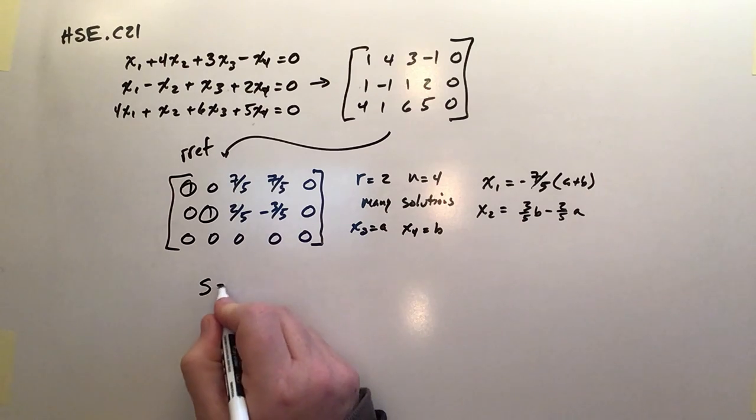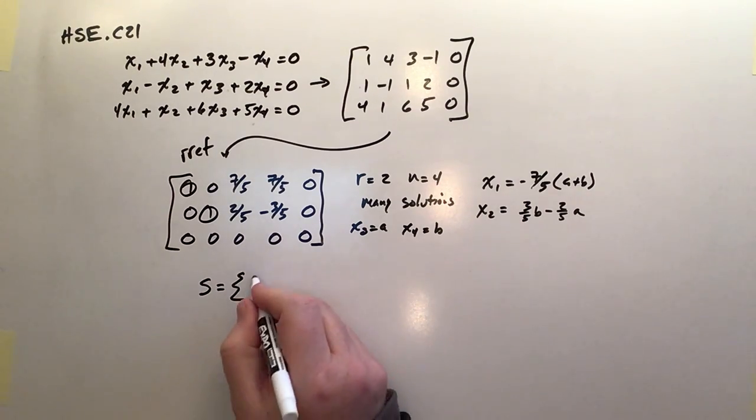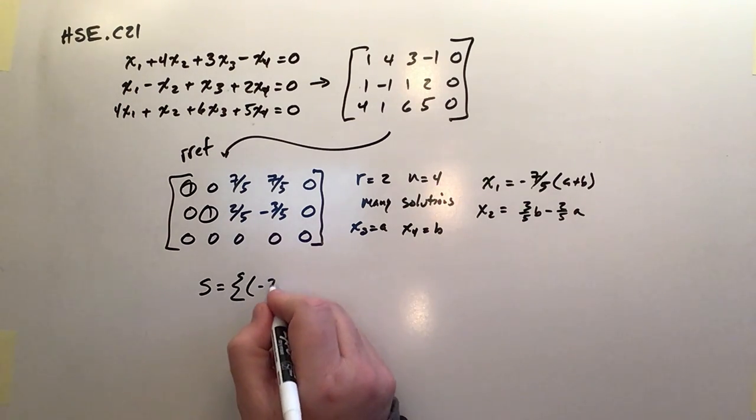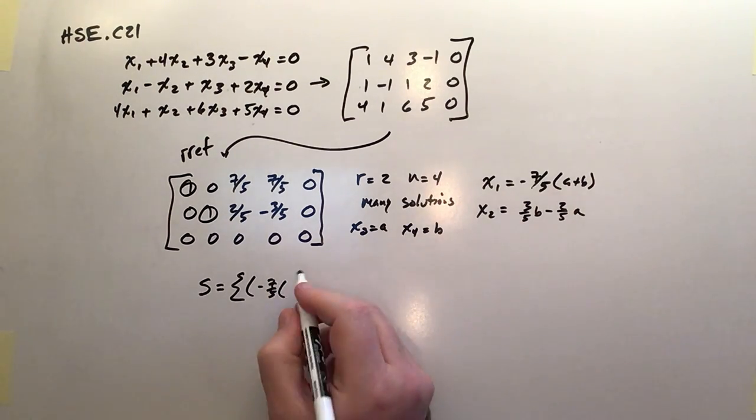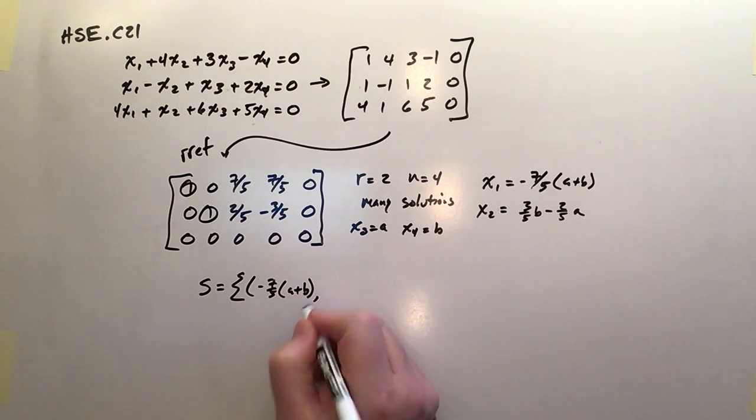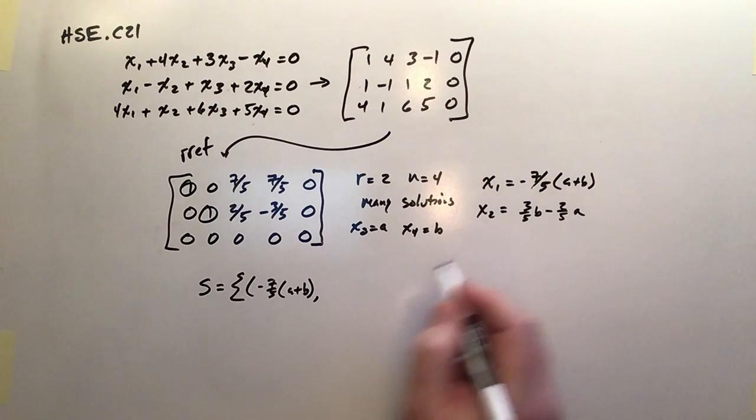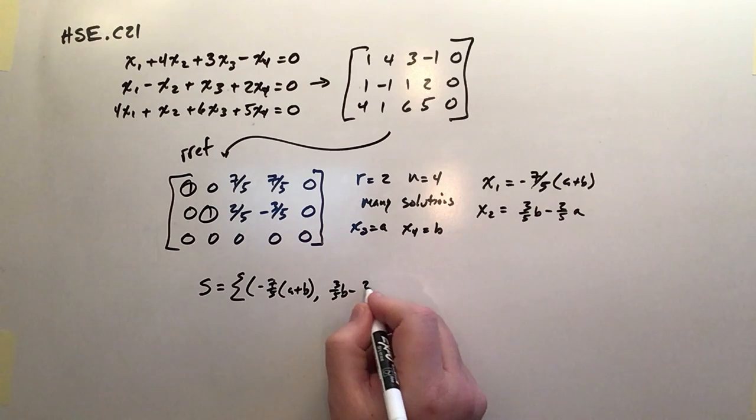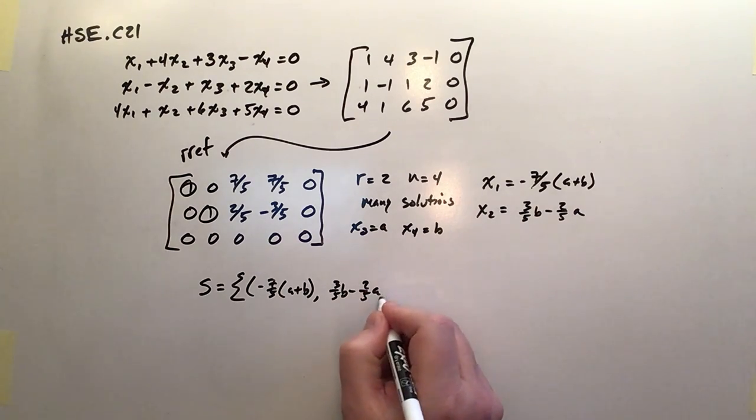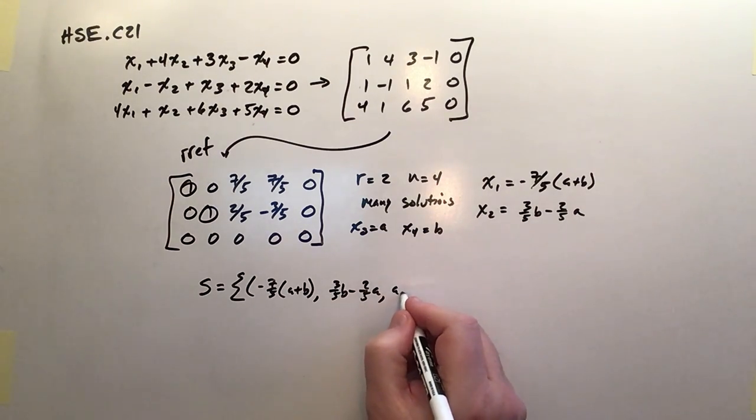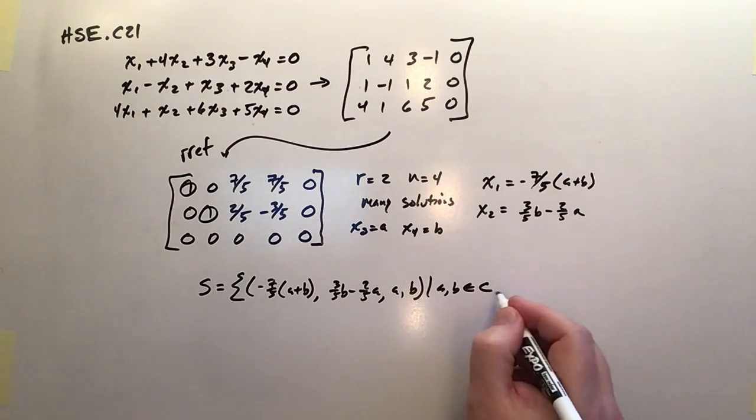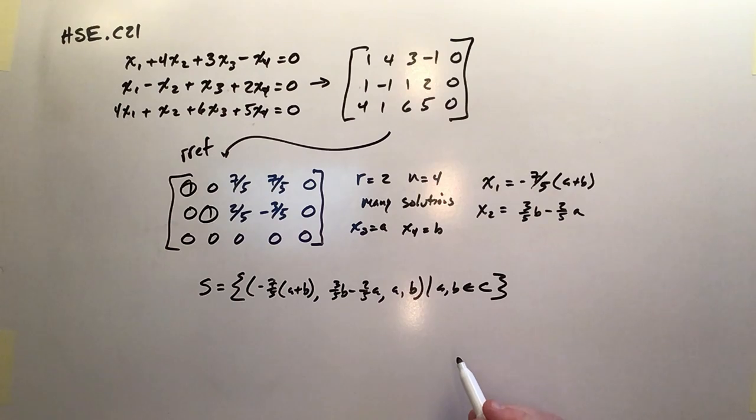That's my solution. So when I say the solution to the system, it's going to be the ordered quad of negative seven-fifths of a plus b. That'll be my x1 coordinate. x2 is going to be three-fifths b minus two-fifths a. And then finally, x3 is a, and x4 is b. And all that such that a and b are both elements of the complex number set. And there it is. That's my complete solution set.